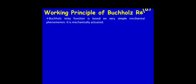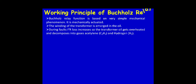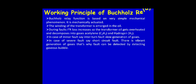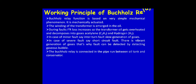The working principle of the Buchholz relay is based on a simple mechanical phenomenon; it is mechanically actuated. The winding of the transformer is immersed in oil. During faults, I-squared losses increase, the transformer oil gets overheated and decomposes into gases — acetylene (C₂H₂) and hydrogen (H₂). In case of a minor fault, there is slow generation of gases, but in case of a severe fault such as a short circuit, there is a rapid generation of gases. Faults can be detected by detecting these gaseous bubbles.